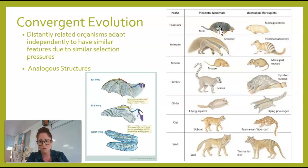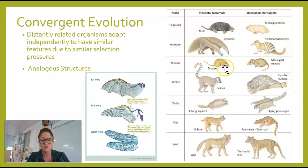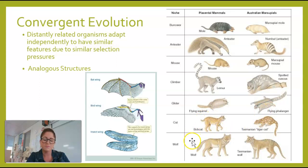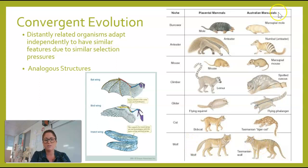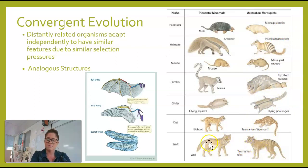Obviously they do have a common ancestor somewhere back in the line, but they're not closely related. The same is true with the mouse versus the marsupial mouse, the lemur, the flying squirrel, bobcats and wolves versus Tasmanian wolves — all of these have marsupial counterparts in Australia. They are not really very related, but they have similar adaptations because they live in similar environments.